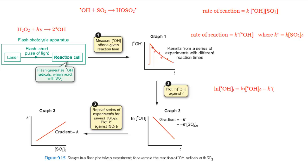Flash photolysis is a method for investigating the kinetics of very fast reactions, such as the reaction between hydroxyl radicals and SO₂ molecules, which is an important reaction in the atmosphere. This reaction takes place in the laboratory on a microsecond timescale.